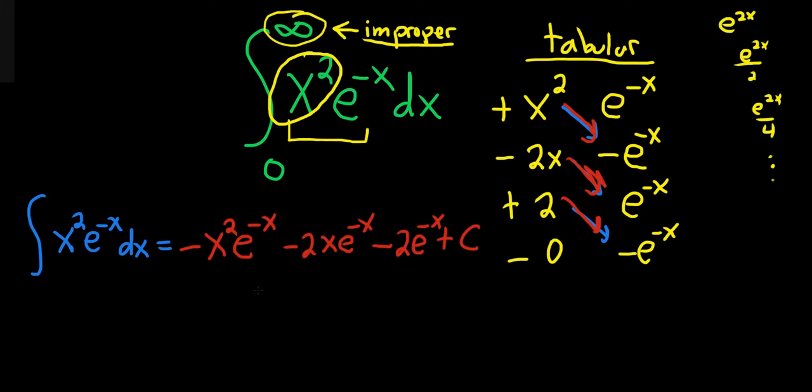Okay, so now let's finish this problem. So this one here is going to be, write it here, 0 to infinity. x²e^(-x) dx.